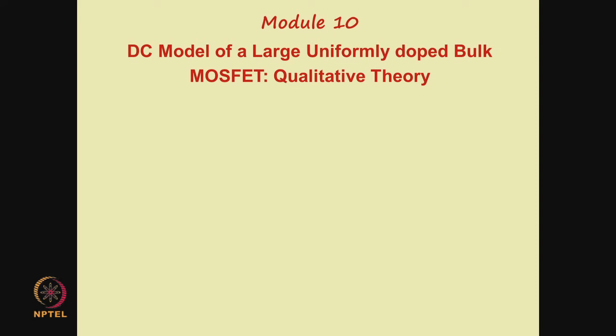In the present lecture, we shall do the following. We shall consider some other features of the shape of the ID-VDS and ID-VGS curves. Specifically, we will consider the subthreshold region and the breakdown region and explain the ID behavior in these regions.